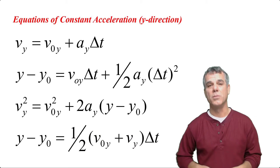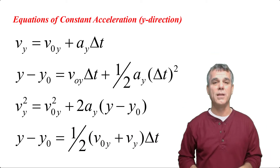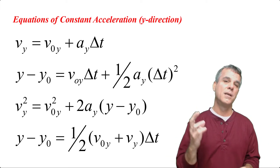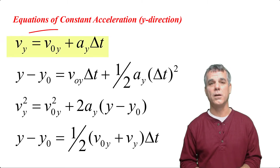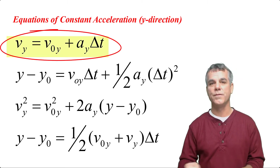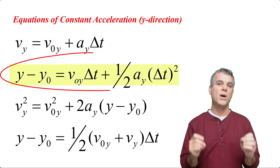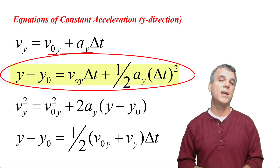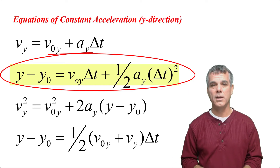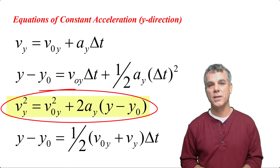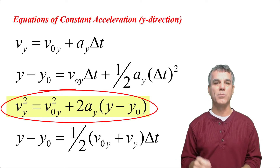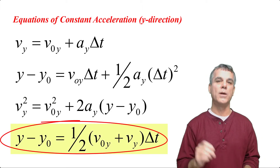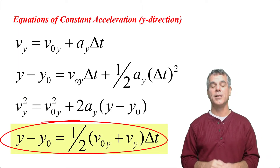If we're talking about vertical motion — just motion straight up and down in a straight line — the equations are exactly the same except everywhere there was an x, now there is a y. So the four equations are: vy equals v0y plus ay times delta t; y minus y0 equals v0y times delta t plus one-half ay delta t squared; vy squared equals v0y squared plus 2ay times (y minus y0); and y minus y0 equals one-half times (v0y plus vy) times delta t.